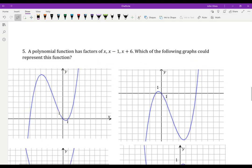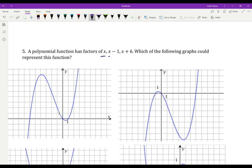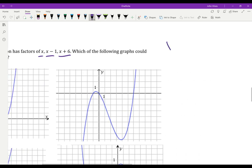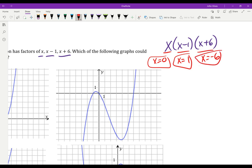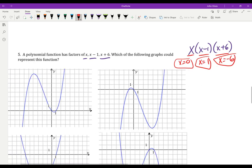So a polynomial has the factors of x, x minus 1, and x plus 6. So these are my factors. My factors are x, x minus 1, and x plus 6. So if those are my factors, what are my 0s? My 0s set each one equal to 0. x equals 0, x equals 1, and x equals negative 6. So these here are my 0s. That's what I'm looking for.